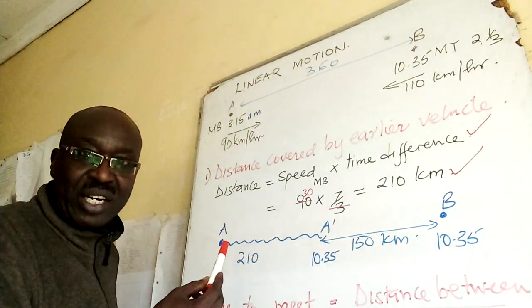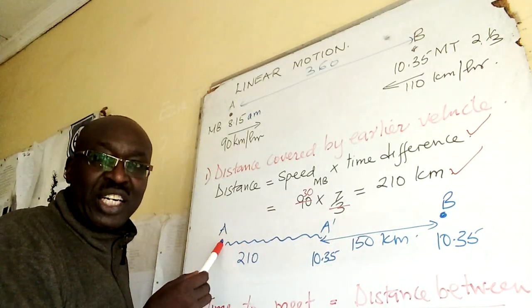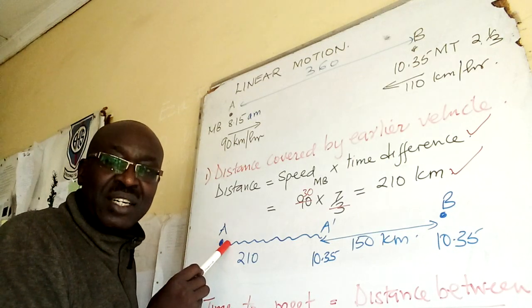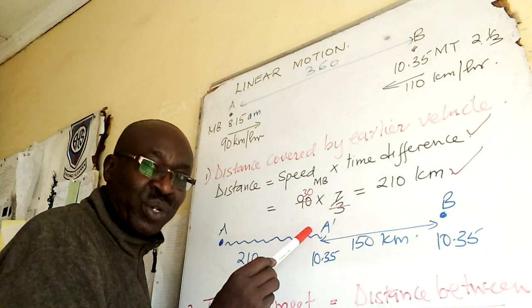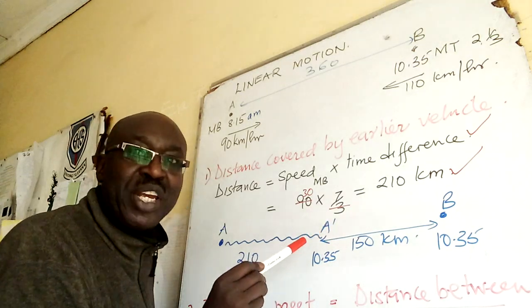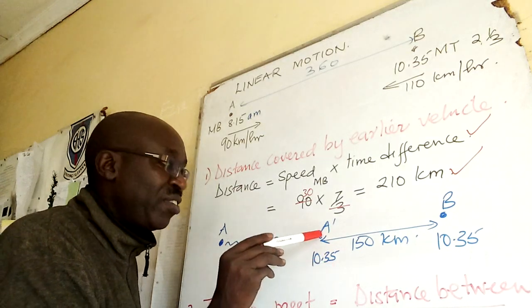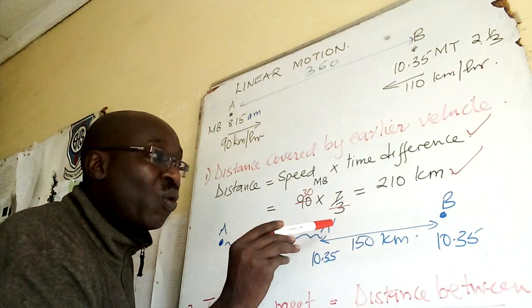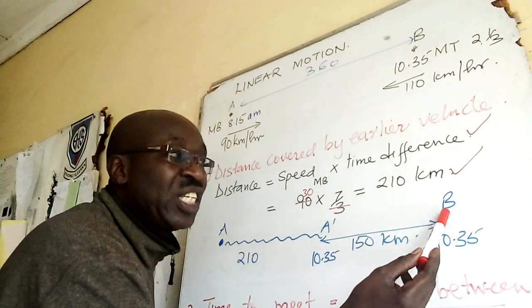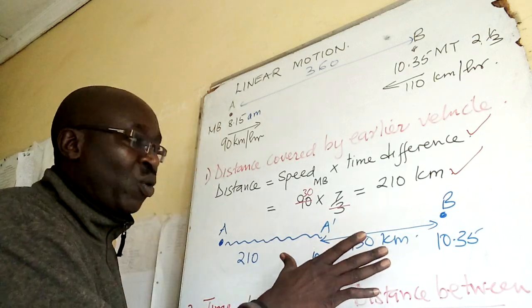So 90 times 7/3: three cancels this three, 30 times seven is 210. This is very important. So I know now, look at my diagram, it started at 8:15 and it has traveled to its new position at 10:35.